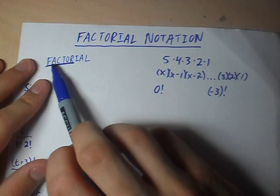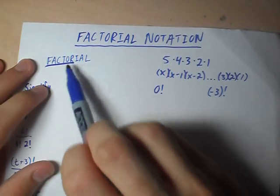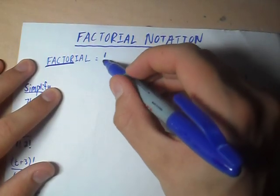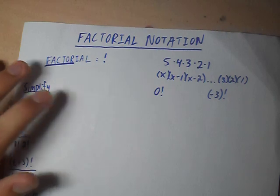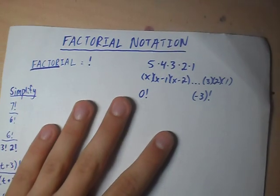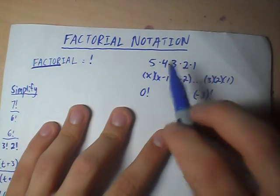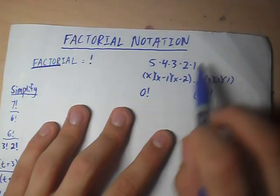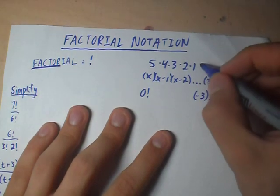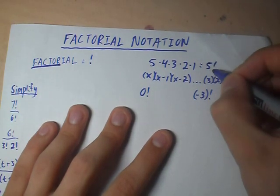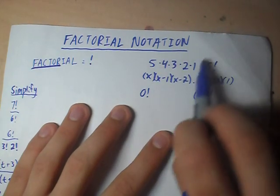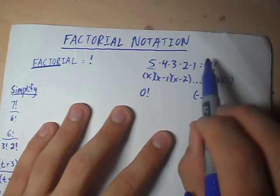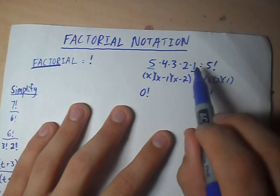Factorial — and I've underlined 'factor' because that's a major part of factorial — is expressed as an exclamation point. So when we look at this string of multiples: 5 times 4 times 3 times 2 times 1, those factors can be expressed as 5 factorial. What's happening is we start with 5 and decrease by one each term, all the way down to our last term, which is always 1.